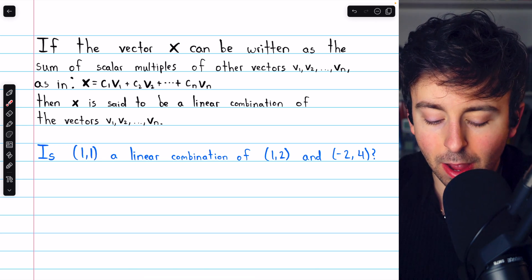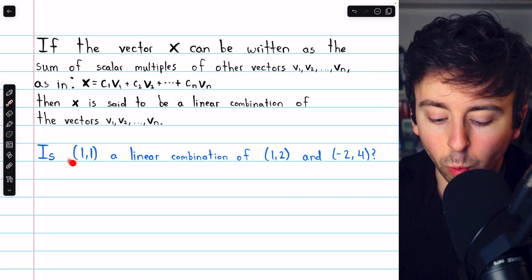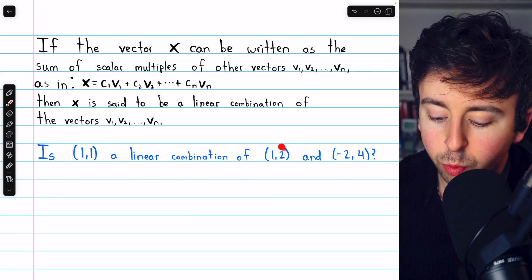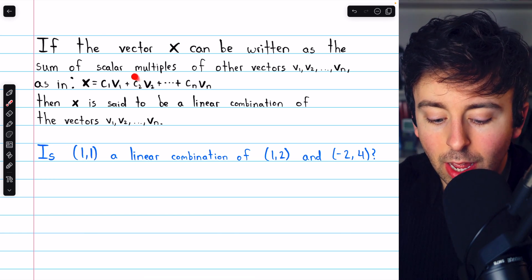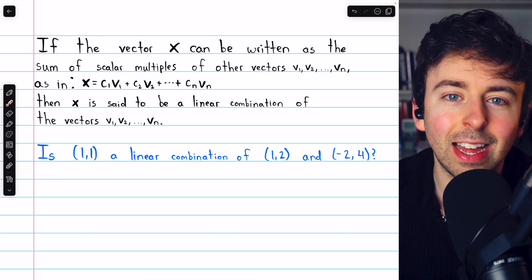In this first example, we'll see if the vector (1,1) is a linear combination of (1,2) and (-2,4). Using the definition, we'll quickly see how to do this.